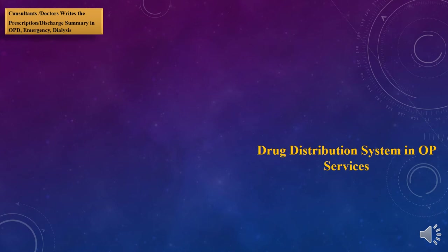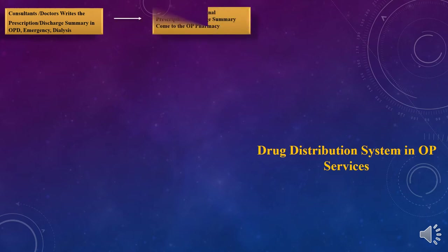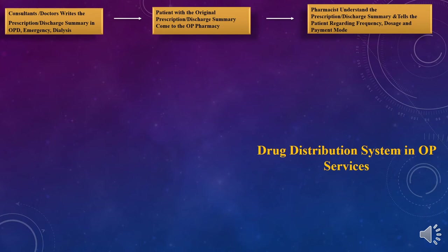When a patient visits the physician on an OPD basis, the consultant doctor writes a prescription or discharge summary for the OPD area, emergency, or dialysis unit. After the drug order is written in manual format, the patient with the original prescription or discharge summary needs to reach the OP pharmacy. The pharmacist at the prescription counter of the OP pharmacy receives the prescription in a dignified manner from the patient.